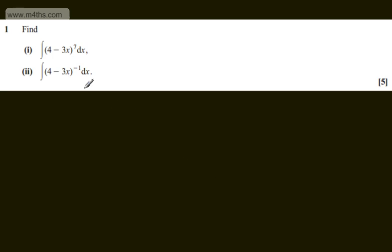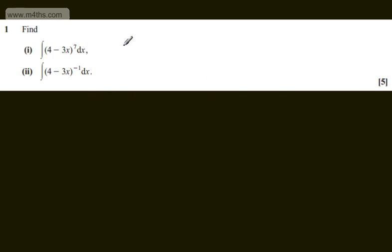This is question number 1. We're asked to find, in the first part, the integral of 4 minus 3x to the power of 7 with respect to x, and in the second part, the integral of 4 minus 3x to the power of minus 1 with respect to x. The question carries 5 marks.